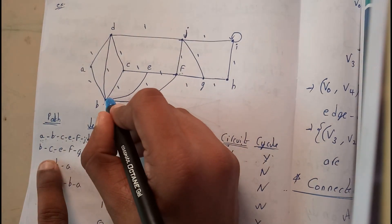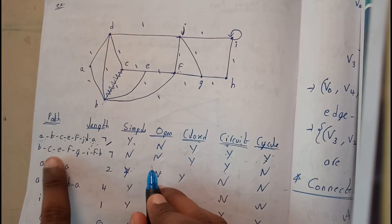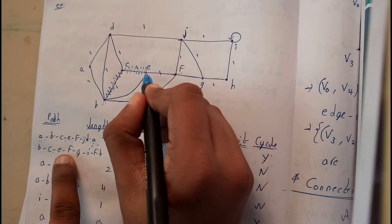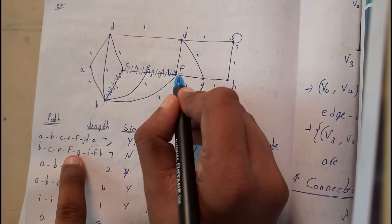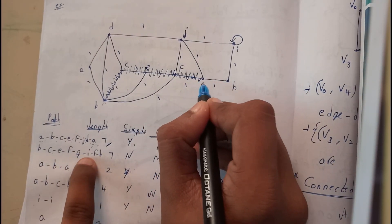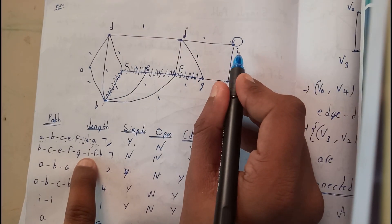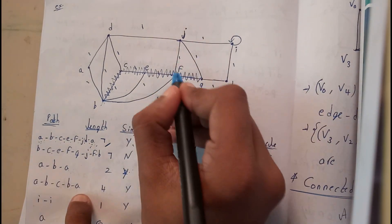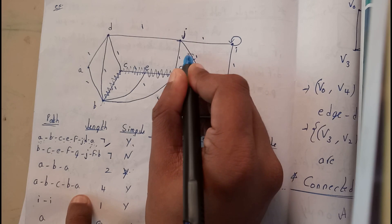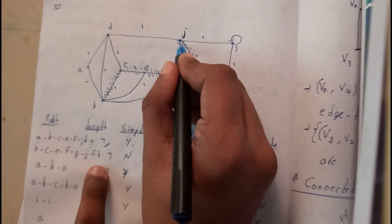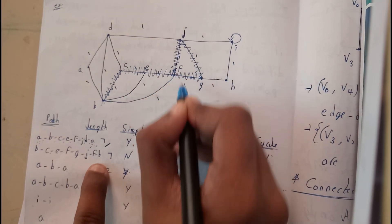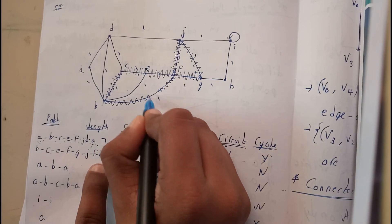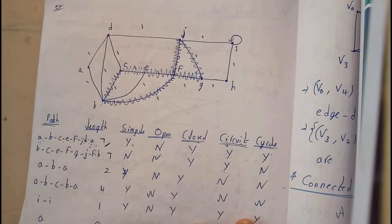So B to C, C to E, E to F, F to G, G to J, J to F, F to B. I traveled like this. I think everyone is clear with this diagram, this kind of explanation was better.